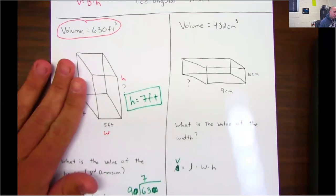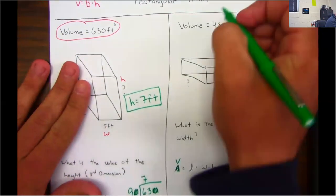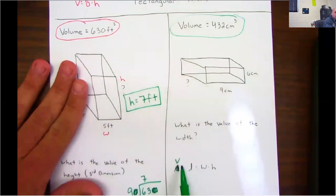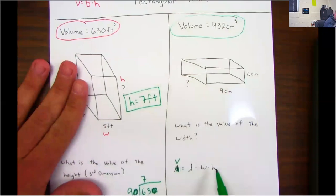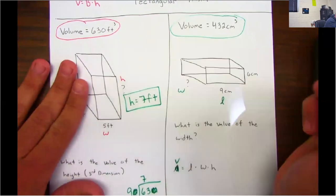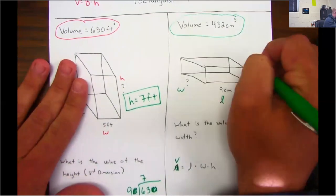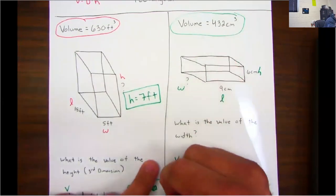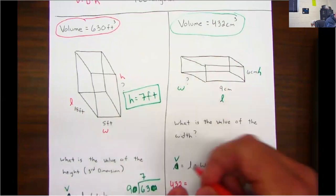All right, check out this next one. Again, it gives us the volume. Start by writing out your formula. There it is: Volume equals length times width times height. Well, it gives me a length, my width is unknown, and it gives me a height. So my volume is 432.